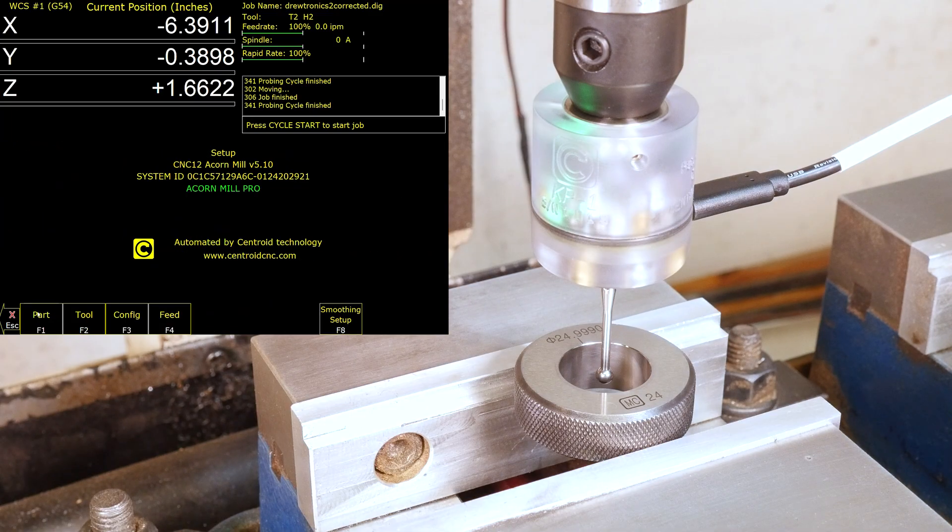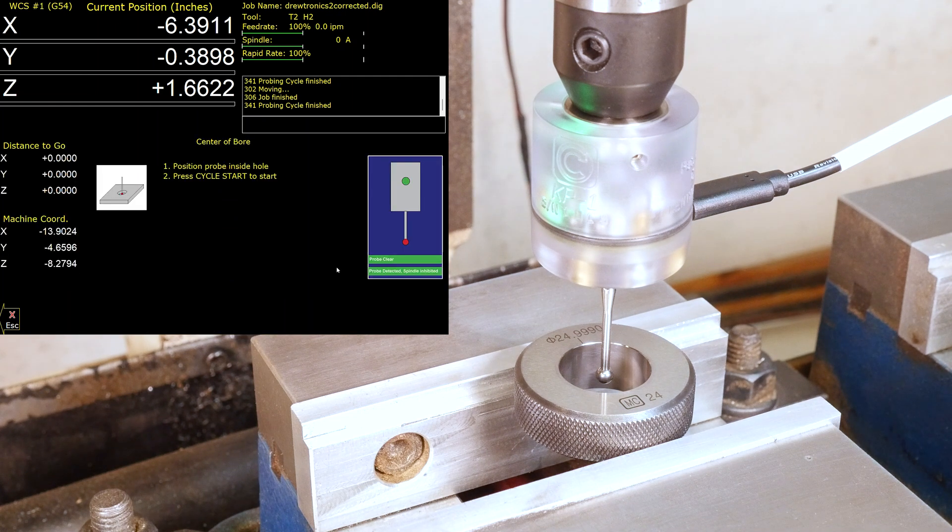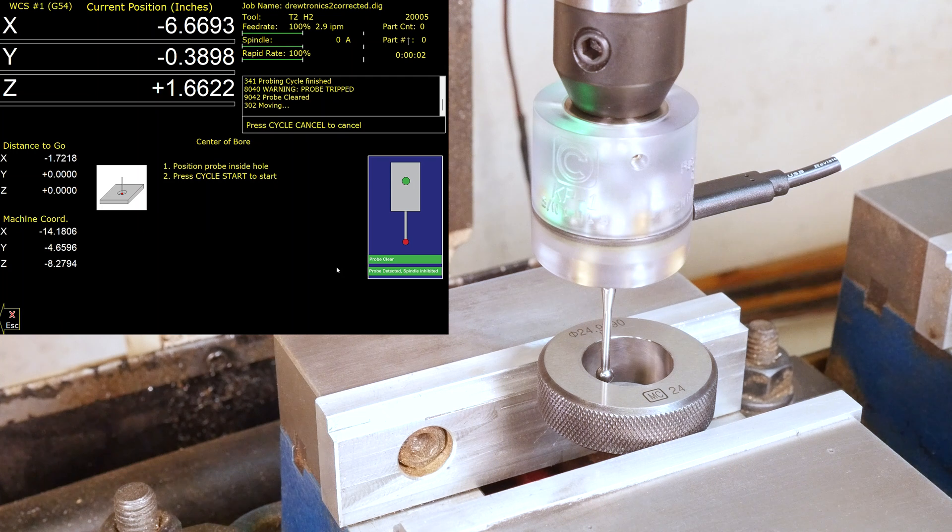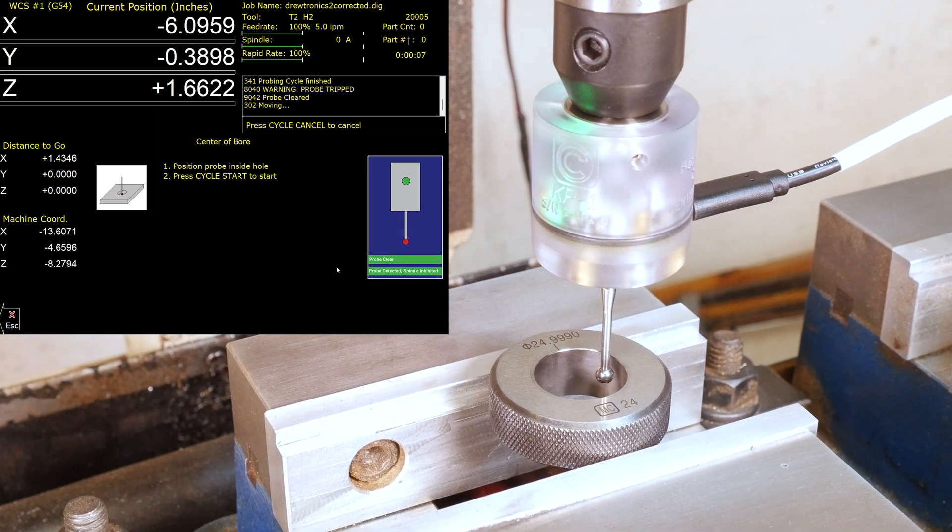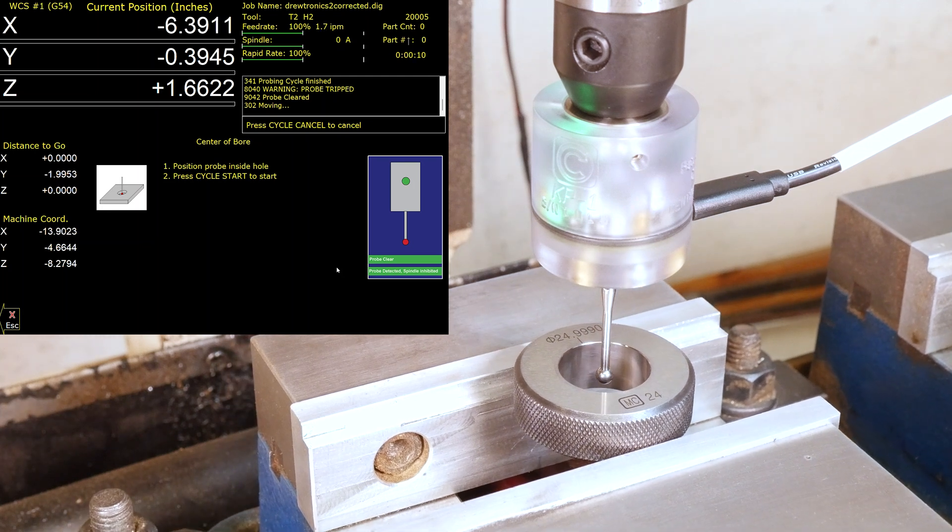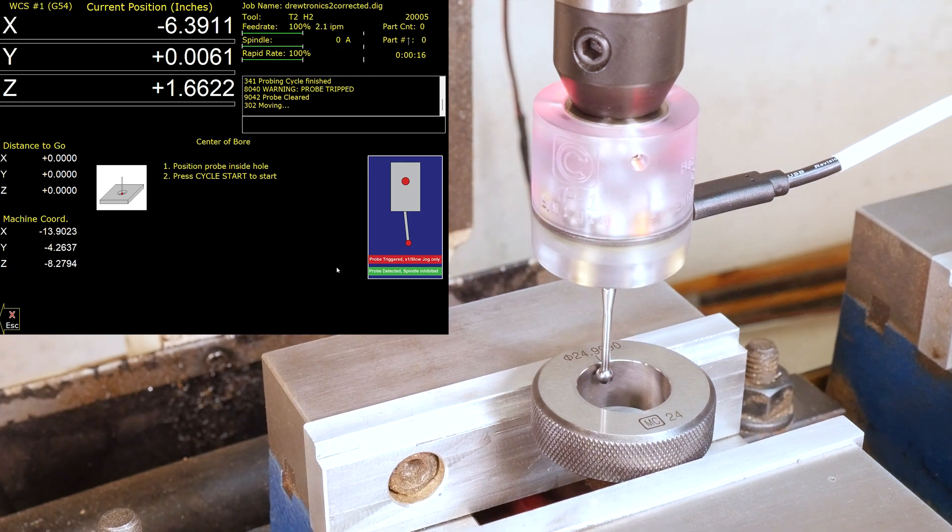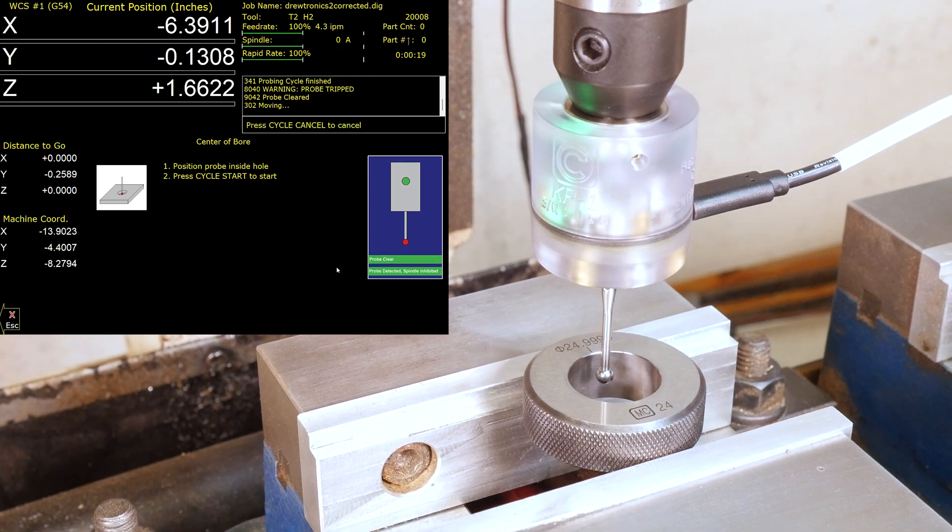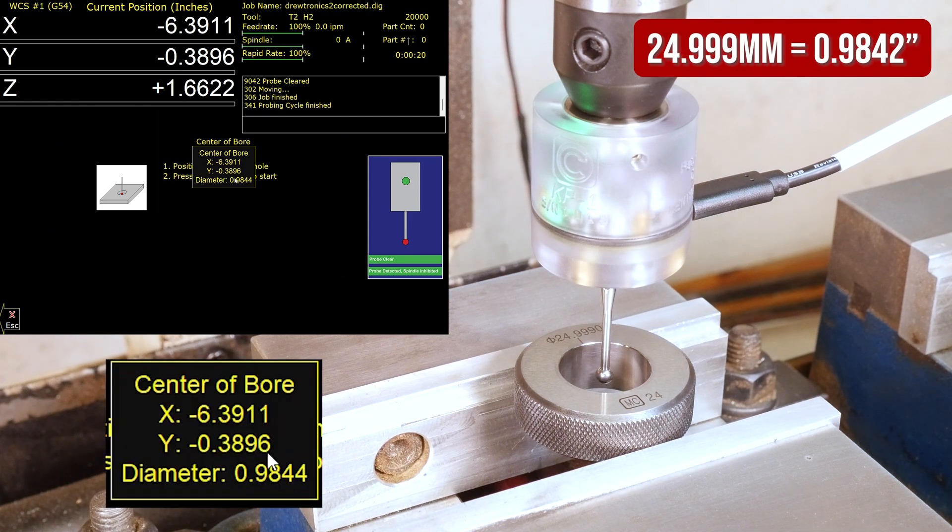Let's run those exact same tests using the Centroid KP1. We'll start out with the bore probing routine probing the bore of the 24.9990 millimeter ring gauge and this time if you look in the control you'll see there's two green ribbons at the bottom of that probe animation. One of them is flashing red as the probe registers a hit but the bottom one says probe detected spindle inhibited so that is the probe detect circuit which is really nice. Okay we've got .9844 inches which puts us two tenths off money that is one tenth of a thousandth of an inch better than we got with the Drutronics probe.